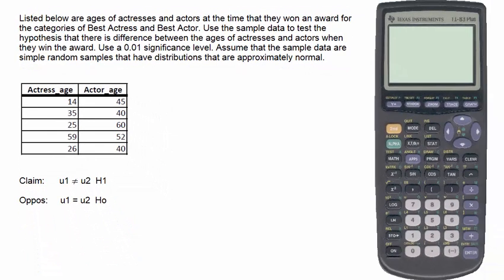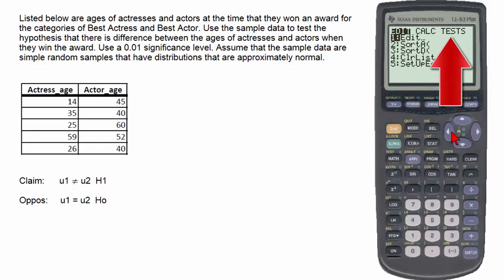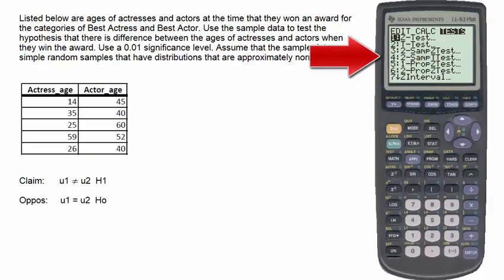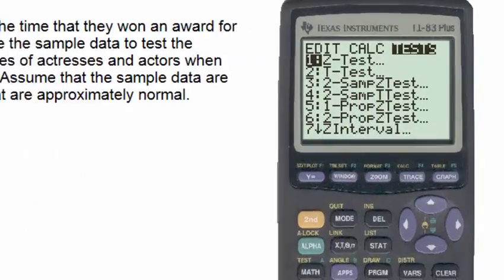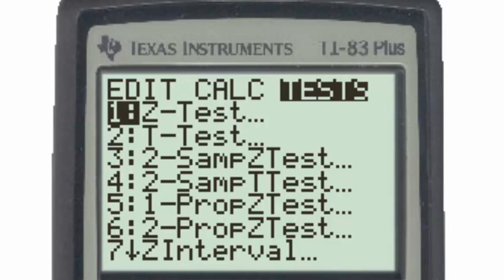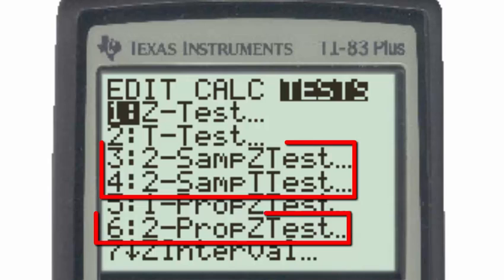We'll use the TI-83 to perform this hypothesis test, going to the stat button and then the test menu. Since our claim contains two letters, the Greek letter mu, we'll be testing a claim about two means. The fact that there are two populations means that we'll be using one of the hypothesis tests with the number two.